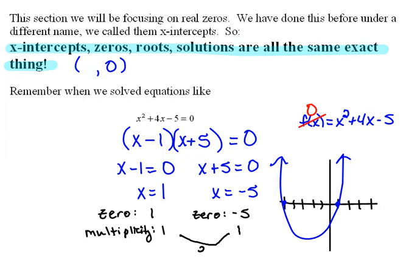Those are both odd numbers, which tells us at this zero, then the graph will cross the x-axis.